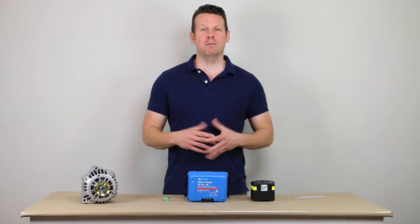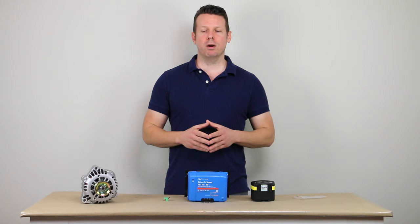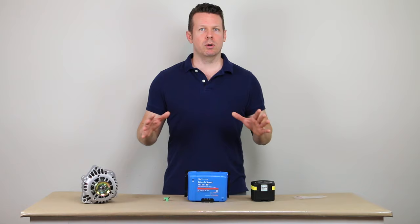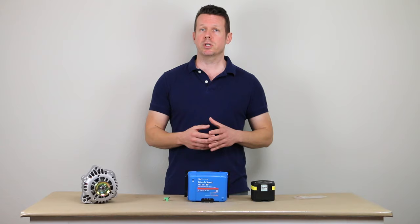So that's mistake number two, not adding an ignition control wire to your charger. And the third mistake is to make sure that your connections are tight. And this can be applied generally to your entire power system. But with alternator charging, we do have a lot of power and a lot of current going to the rear system. So we need to make sure things are done right.